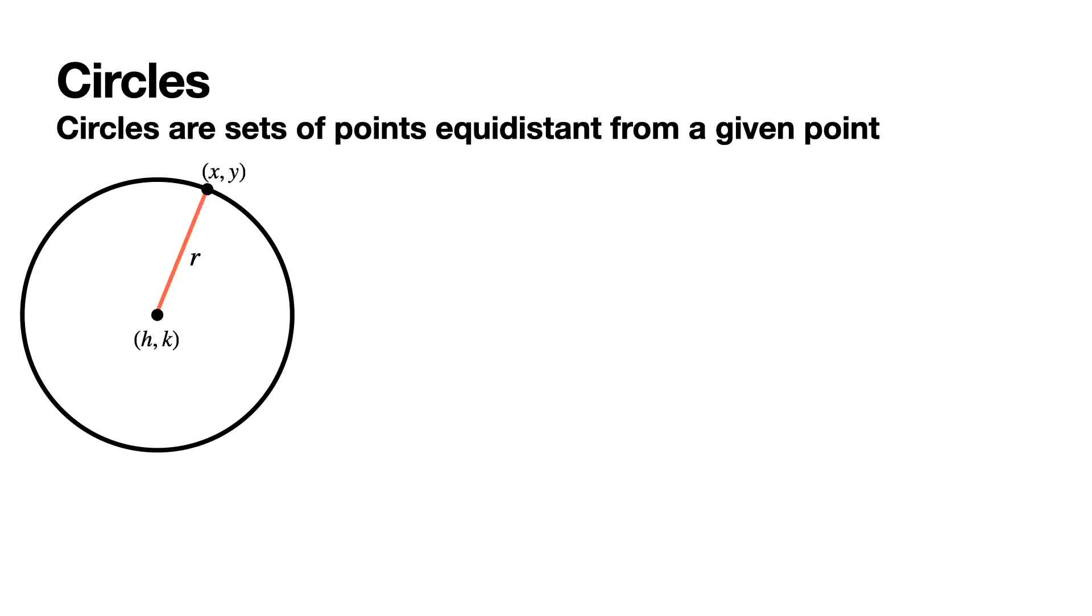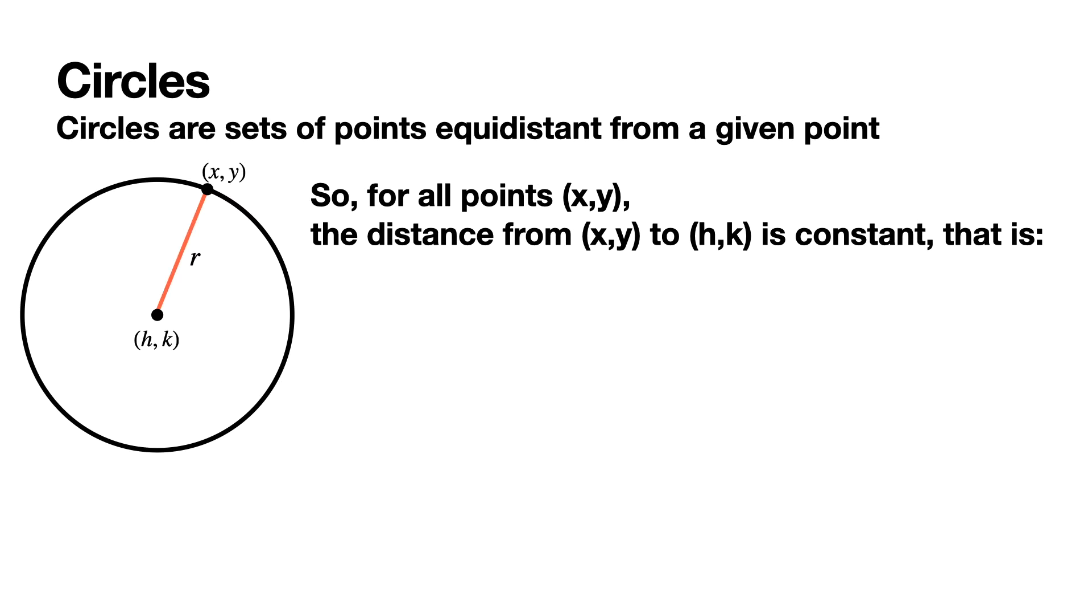A circle is a special type of ellipse and we're going to start the discussion there because circles are simpler than ellipses. Circles are sets of points equidistant from a given point. The picture shows a circle with center (h,k) and radius r, where all points (x,y) to (h,k) are the same distance. The distance from (x,y) to (h,k) is constant and we can use the distance formula to set it up as an equation.